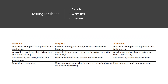Testing methods include black box, white box, and gray box. In black box testing, we know nothing about the internal working of the application; out of these three, this is the least time consuming. In white box testing, we know everything about the internal working of the application. In gray box testing, which is in between black box and white box, we know something about the internal working of the application.